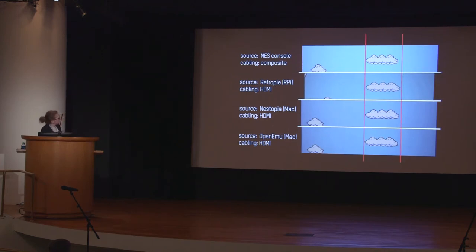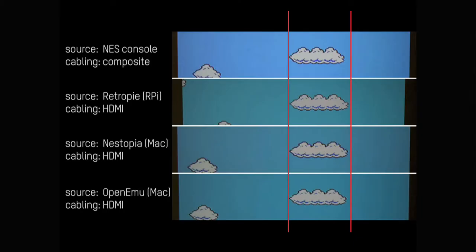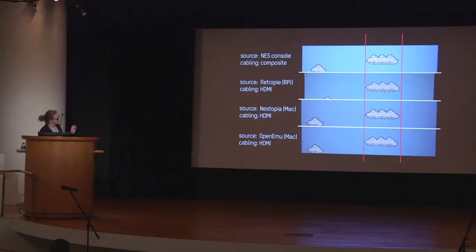On top, we have the NES console. The second is the artist provided file executed on the Raspberry Pi. Then we have the other two emulators. All four versions were displayed with the same projector and identical settings and also the camera was always standing at the same point. But what you can see already here is that the horizontal output of the RetroPie is much narrower than the others. You can also see differences in color.